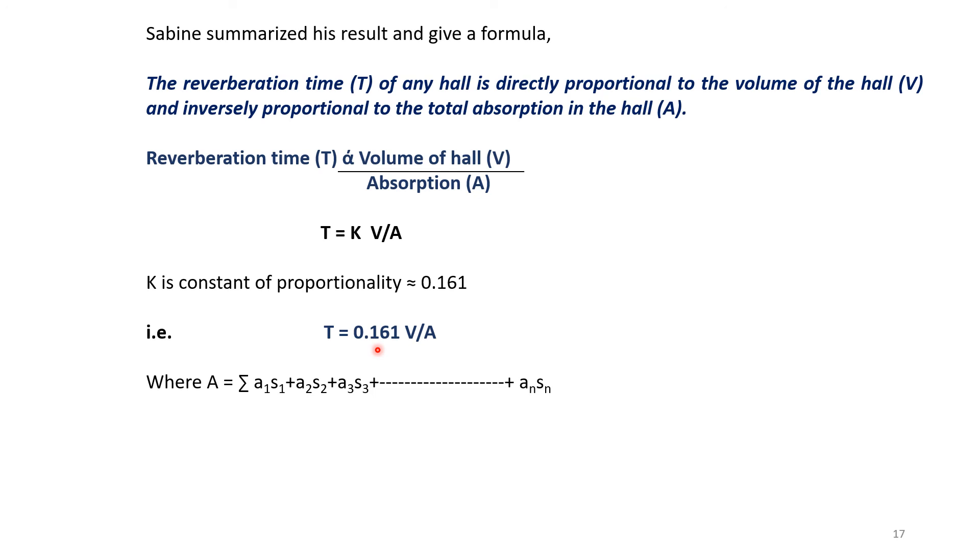The total absorption in the hall is calculated by considering different objects present in the hall. If there are N objects, we have to consider the absorption coefficient of each object and the surface area of that object. By taking summation of a times S, coefficient of absorption and surface area, we can calculate the total absorption. The formula is T = 0.161V/(a₁S₁ + a₂S₂ + a₃S₃ + ... + aₙSₙ).